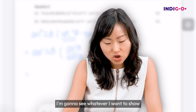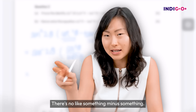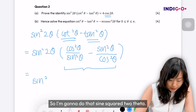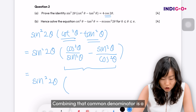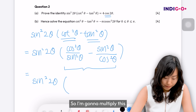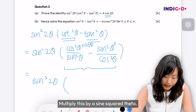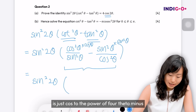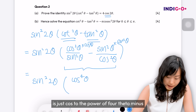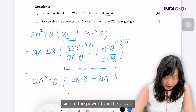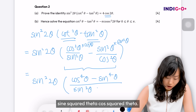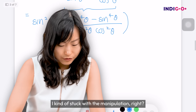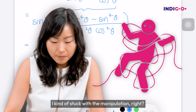Moving on to the next step: whatever I want to show is only one single piece, there's no something minus something, so it's a hint for me to combine these into a single fraction. The common denominator is sine squared theta cos squared theta, so I multiply the first term by cos squared theta and the second by sine squared theta. Putting them together: cos squared theta times cos squared theta is cos to the power of 4 theta, minus sine to the power of 4 theta, over sine squared theta cos squared theta.